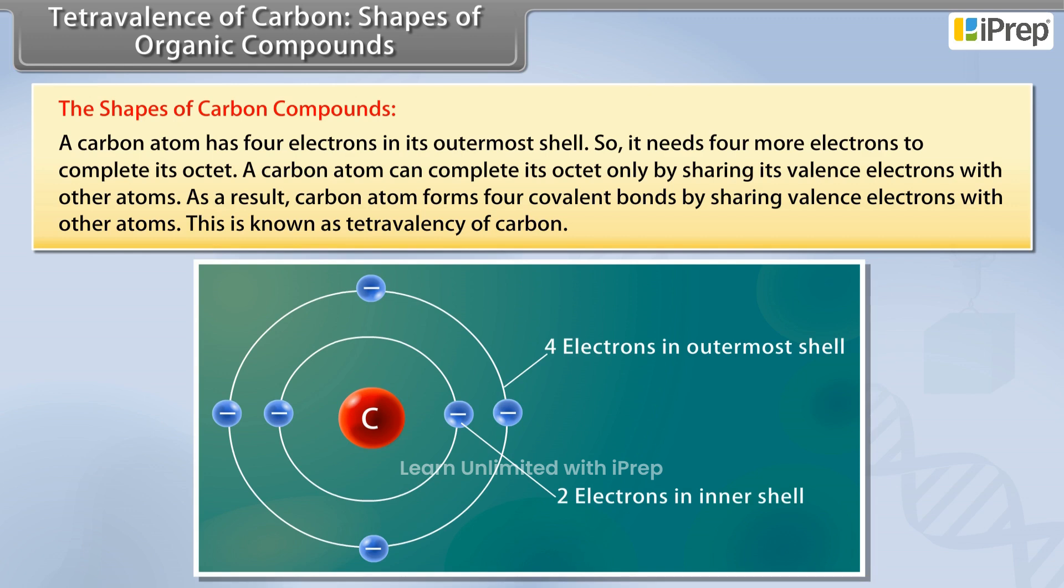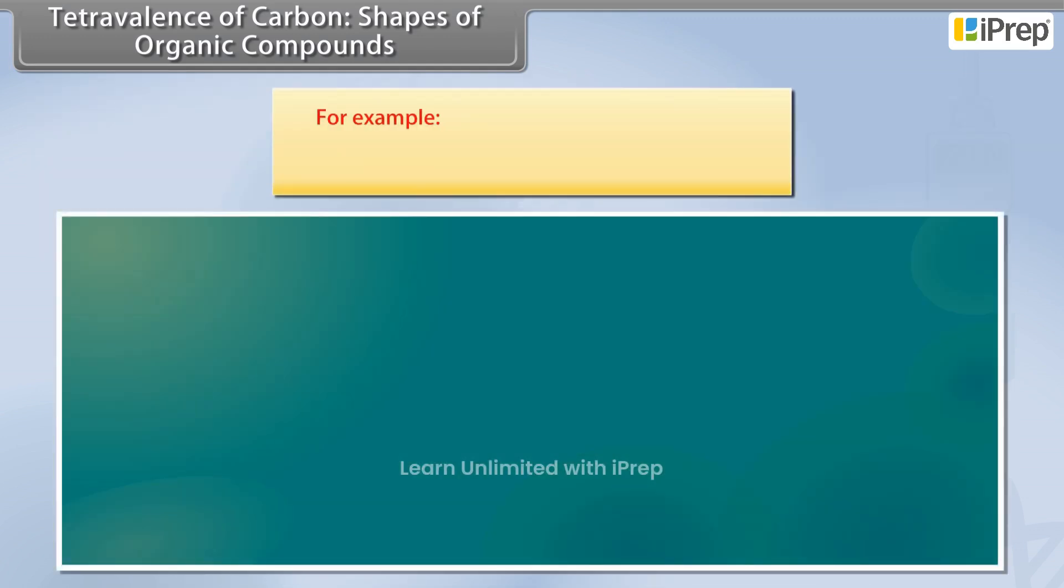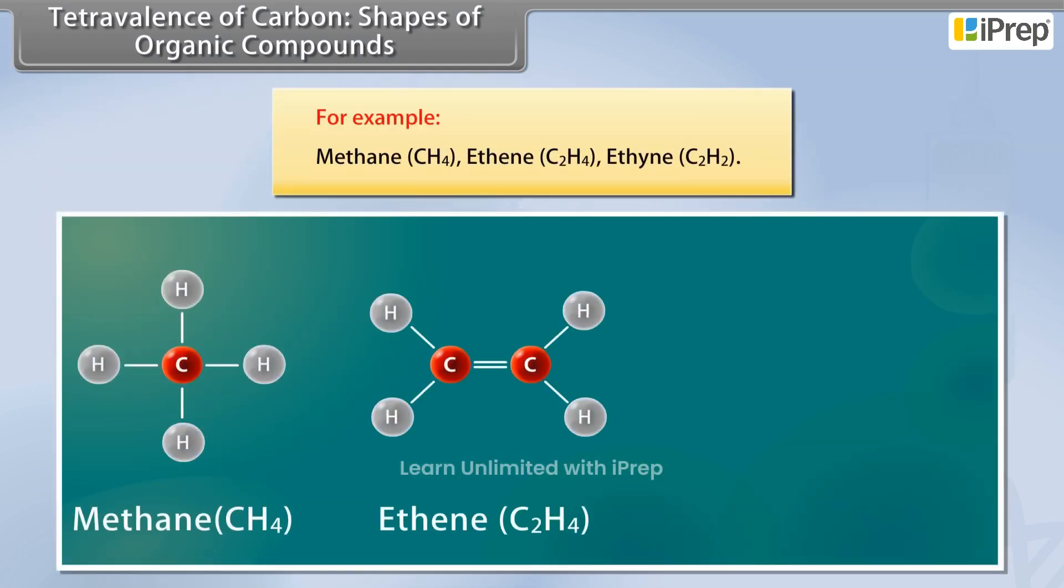This is known as tetravalency of carbon. For example, methane, ethene, ethyne.